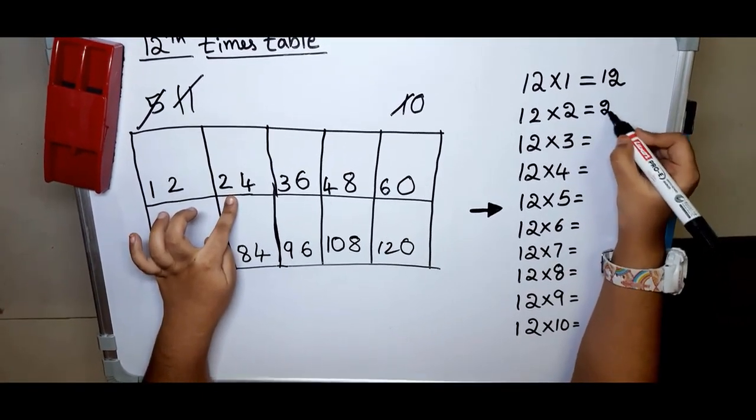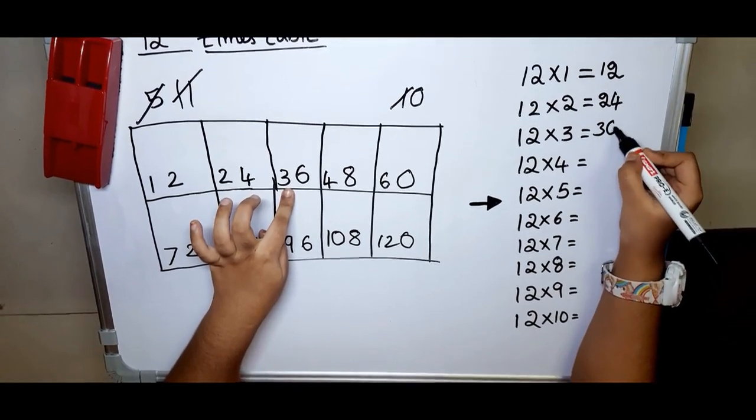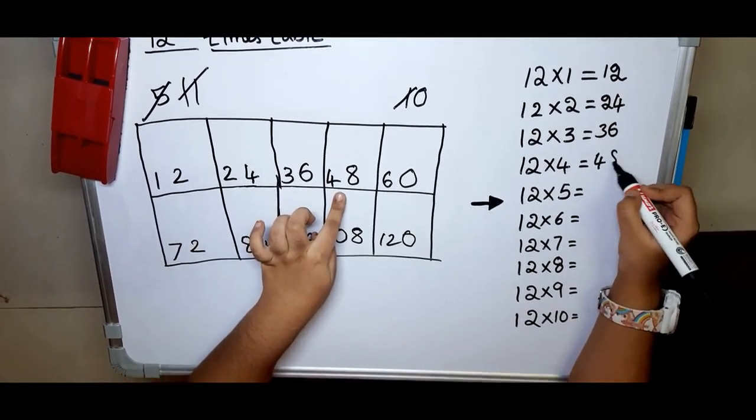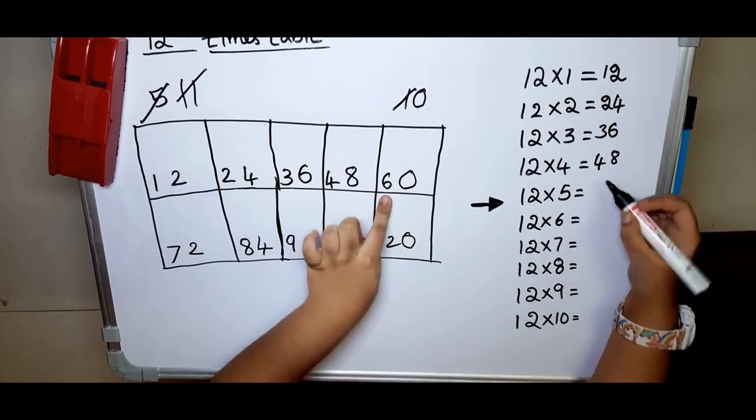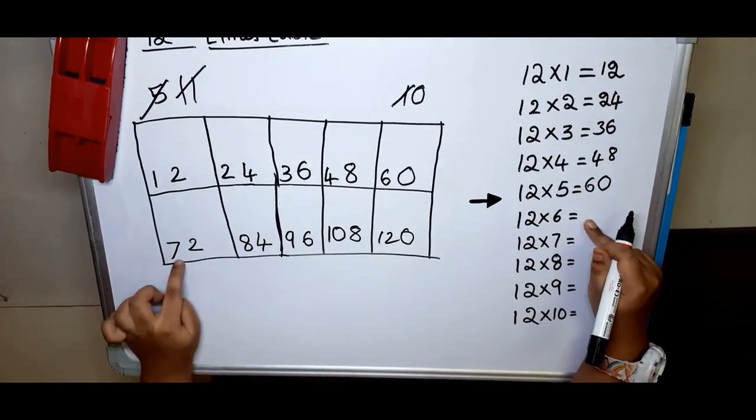...seventy-two, twelve sevens are eighty-four, twelve eights are ninety-six.